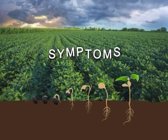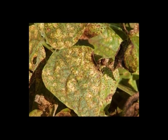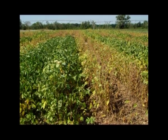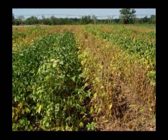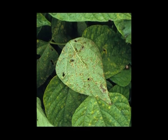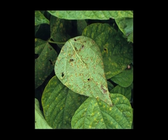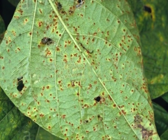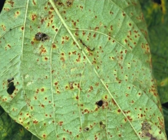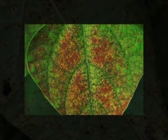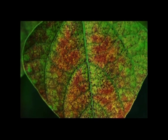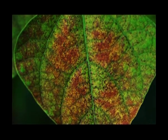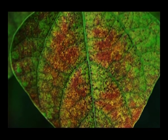Now let's see the rust symptoms. The symptoms mostly appear on leaves, though they are also found on petioles and stems of some hosts. Rust pustules appear on either side, but are more common on the lower surface. The uredosori are minute, roundish, slightly raised and reddish brown coloured. Later in the season, with the formation of teliospores, the sori turn dark brown or black. Diseased leaves may wither or fall off under severe infection.